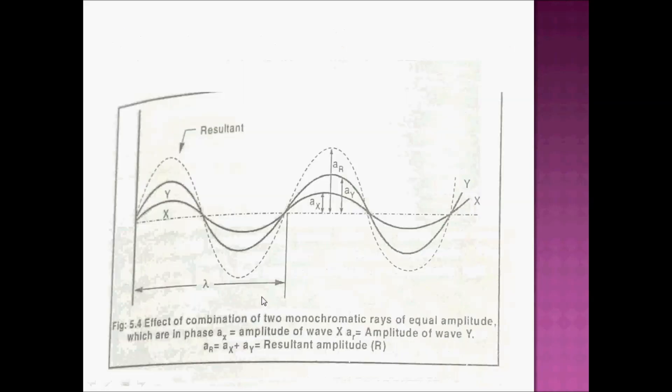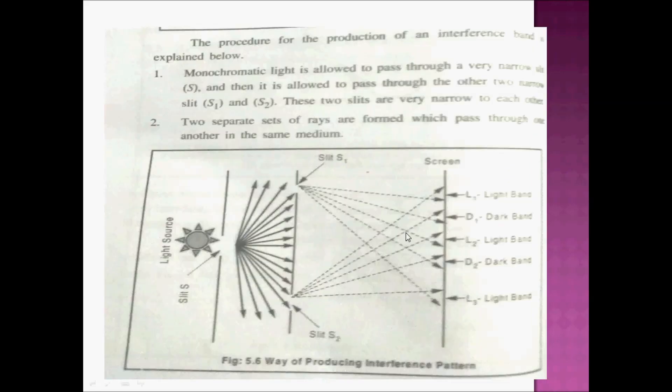Interference pattern formation: the effect of combination of two light rays X and Y of the same wavelength can be explained. When waves combine, maximum amplitude results in constructive interference and minimum amplitude results in destructive interference. Using two slits, you will see different patterns on the screen - different light and dark bands.